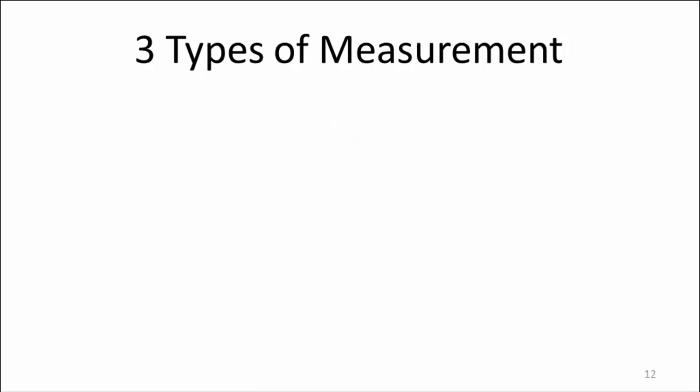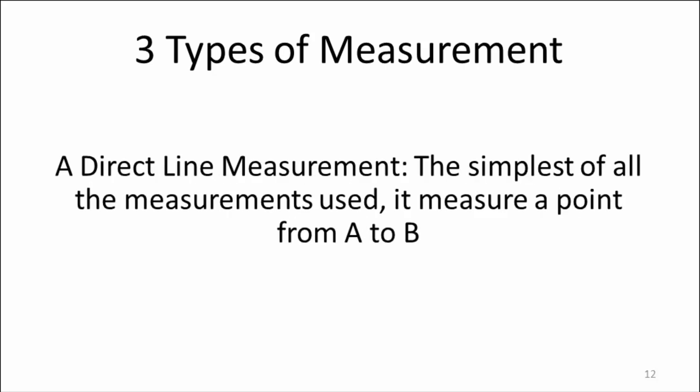Surveying is not complicated. In general, we're only going to use three types of measurement when surveying a garden. A direct line measurement is the simplest of all and literally does what it says on the tin. It measures from point A to point B.